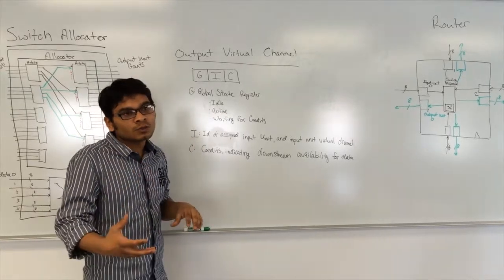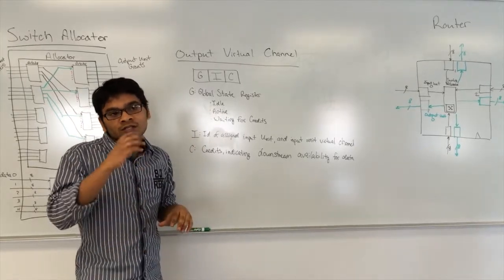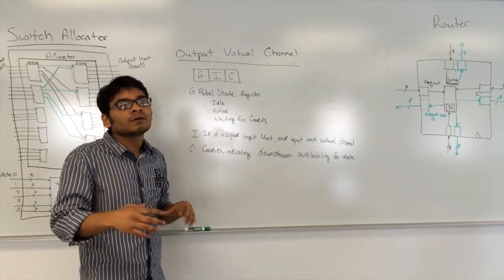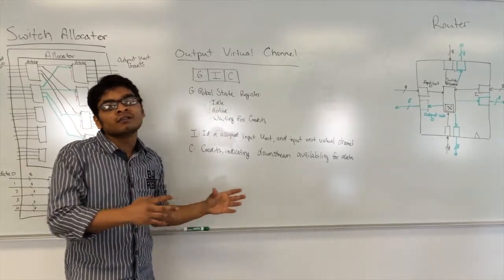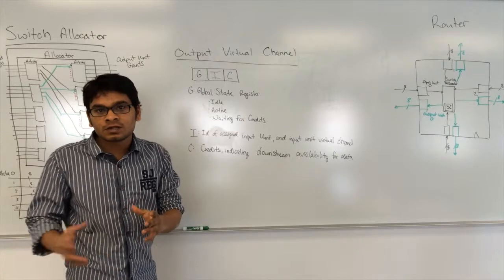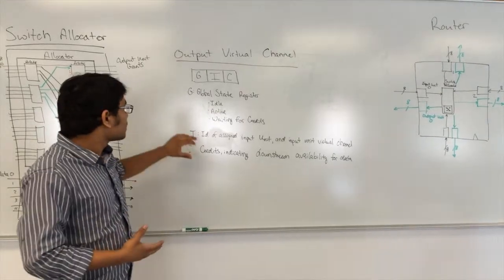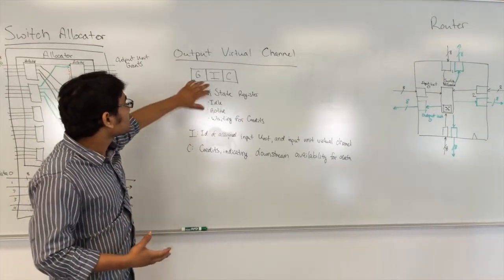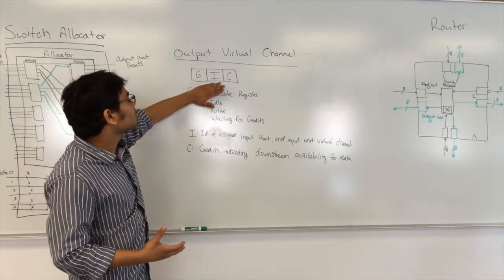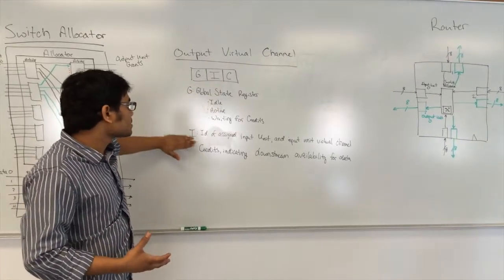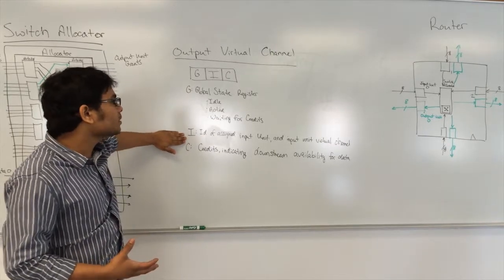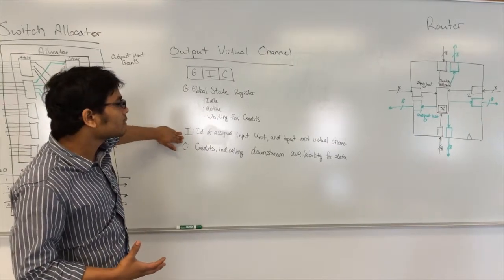It remains active until the final flit has reached the output port. And coming to the second field in the state register — that is the ID of the assigned input unit and the input unit virtual channel.